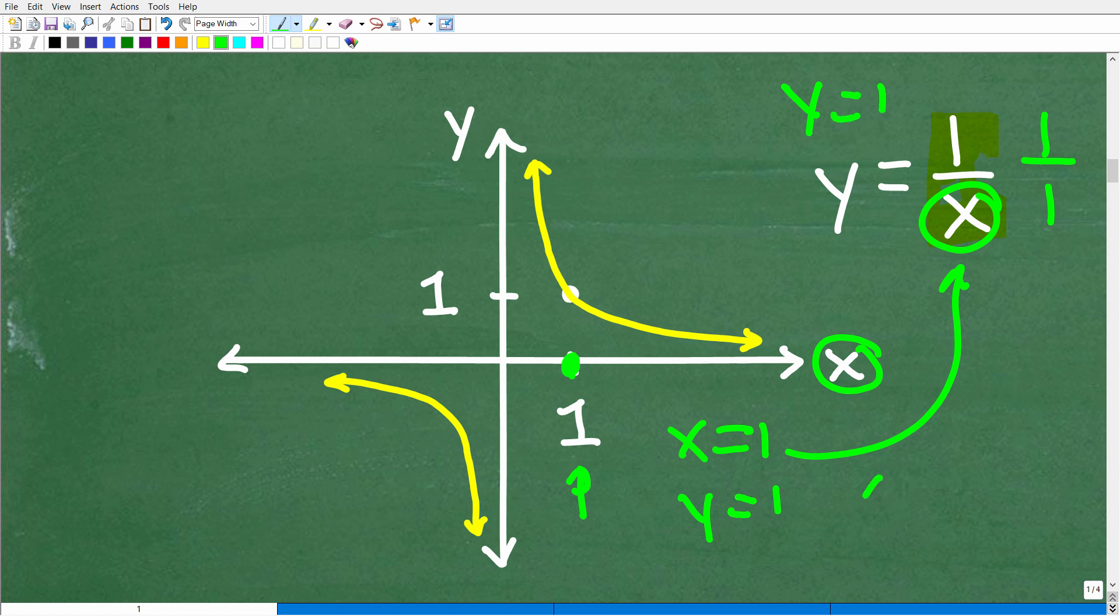All right, so when x is 1, y is 1. All right, so that's the coordinate, the x, y coordinate, 1, 1, all right, so if I want to kind of plot this down or plot this on my graph, here I have 1 for x and 1 for y. So that's the point right there.